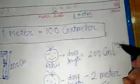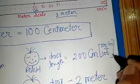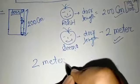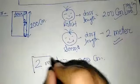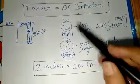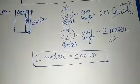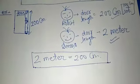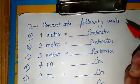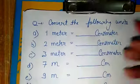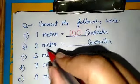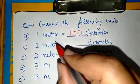The scale was placed from 0 to 100, then placed again from 0 to 100 — that's one more 100, so 100 plus 100 equals 200 cm. This means 2 meters equals 200 cm. So students, just as 1 meter has 100 cm, similarly 2 meters has 200 cm. Now let's do some unit conversion exercises. Students, the question is: convert the following units. 1 meter equals how many cm? — 1 meter equals 100 cm.